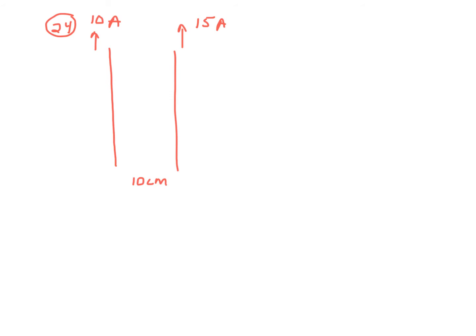We have two parallel wires laying flat on a piece of paper or flat on a screen, with currents in the same direction. Let's say both currents are towards the top of the page. The two wires are 10 centimeters apart, and we're looking for the magnetic field midway between the two wires in the plane of this paper or this screen.